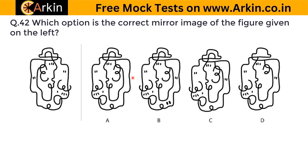The next question asks which is the correct mirror image of the figure given on the left. Instead of comparing each option to the original, compare them among themselves to save time. Looking at differences: in some options a line is missing or extra. One option has a line coming out where it shouldn't. Another has a line missing. After eliminating the options with incorrect features, the correct answer is C.